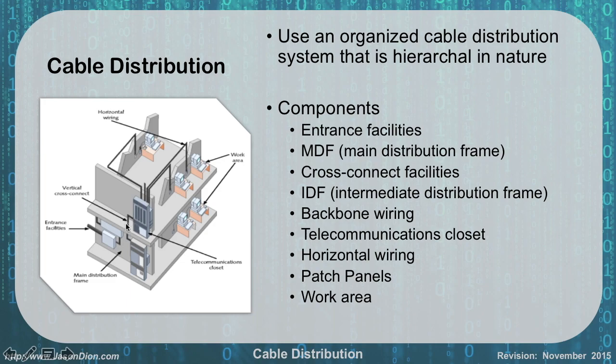You'll do that through a cross-connect, which is a cable that goes from the main distribution to the intermediate distribution frame. We also have our backbone wiring, which is the wiring that goes between two switches or two routers inside your building, forming the backbone of your network.